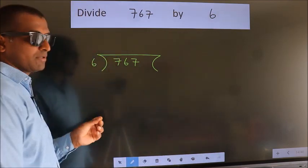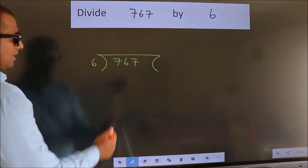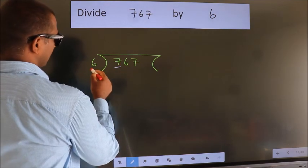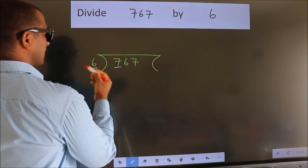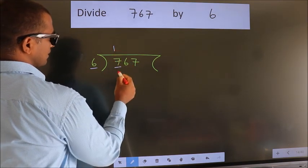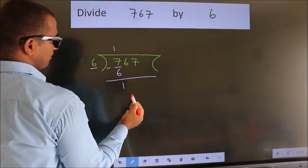This is your step 1. Next, here we have 7, here 6. A number close to 7 in 6 table is 6 once 6. Now, we should subtract. We get 1.